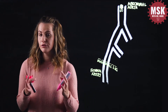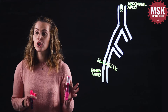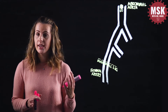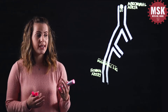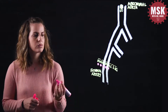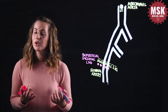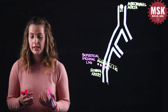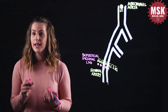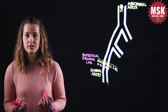The major lymph node groups in these areas are going to be the superficial inguinal lymph nodes, which are just below the inguinal ligament or canal, and then located adjacent to the femoral artery we have a small cluster of lymph nodes that are going to be the deep inguinal nodes.